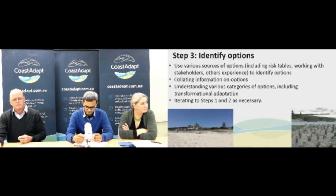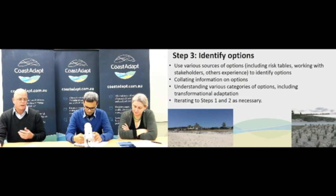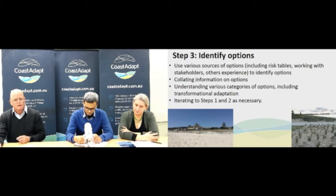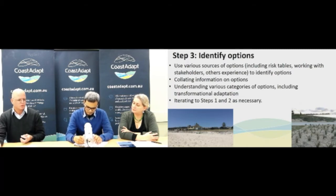Step three is when we start to think about what we're going to do about these risks and we need to identify the options available to us. You can use a number of different ways of sourcing adaptation options — some will fall directly from your risk tables. A very important issue at this stage is working with your stakeholders to think about what they think is required to deal with the issue, because they are the people who will be affected by it.